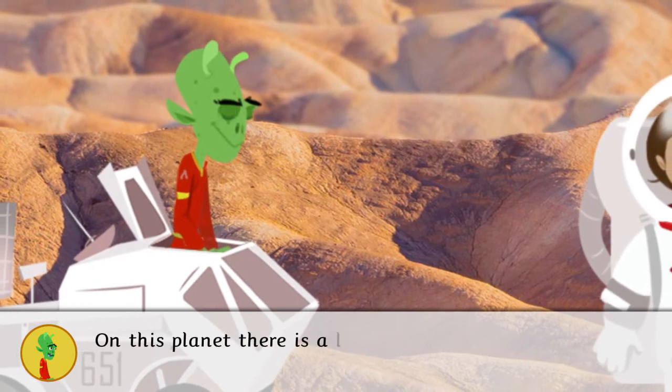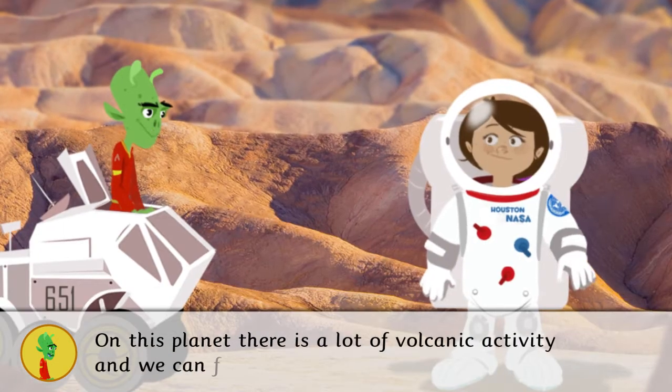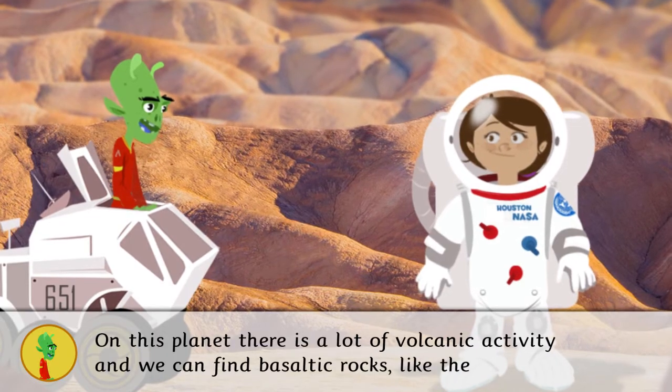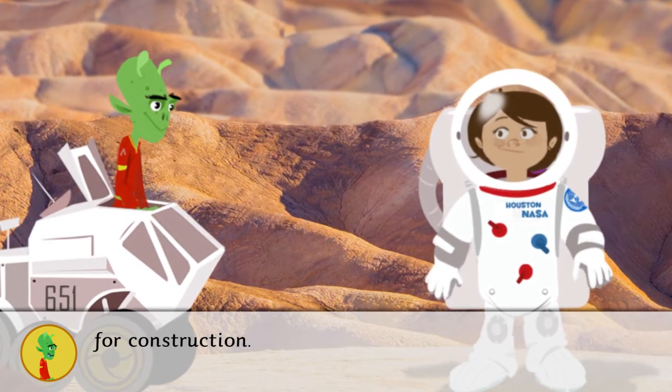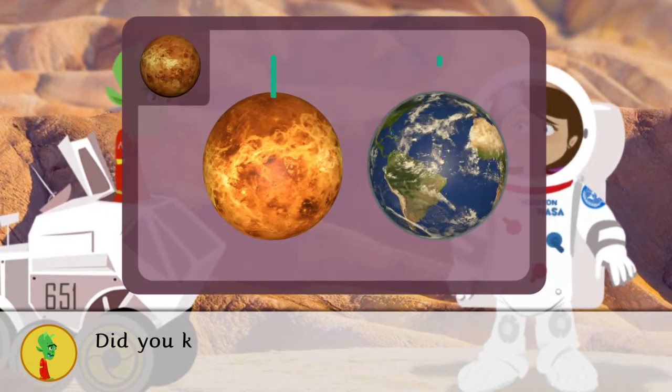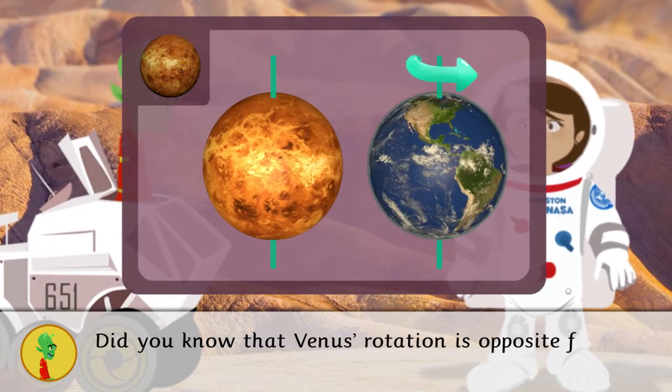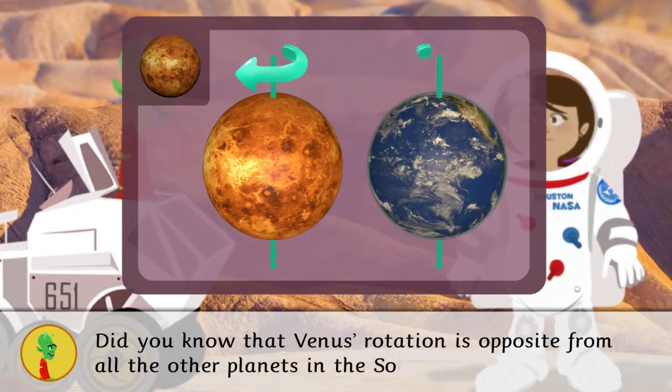On this planet there is a lot of volcanic activity and we can find basaltic rocks like the ones used for construction. Do you know that Venus' rotation is opposite from all the other planets in the solar system?